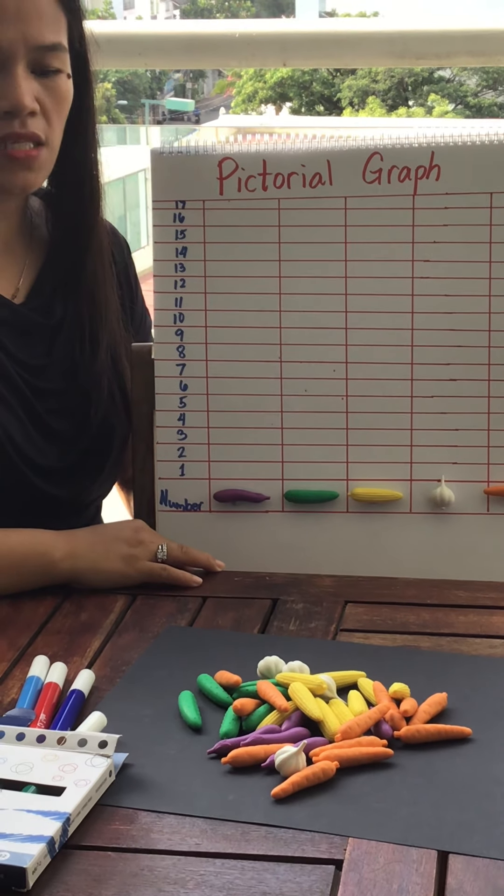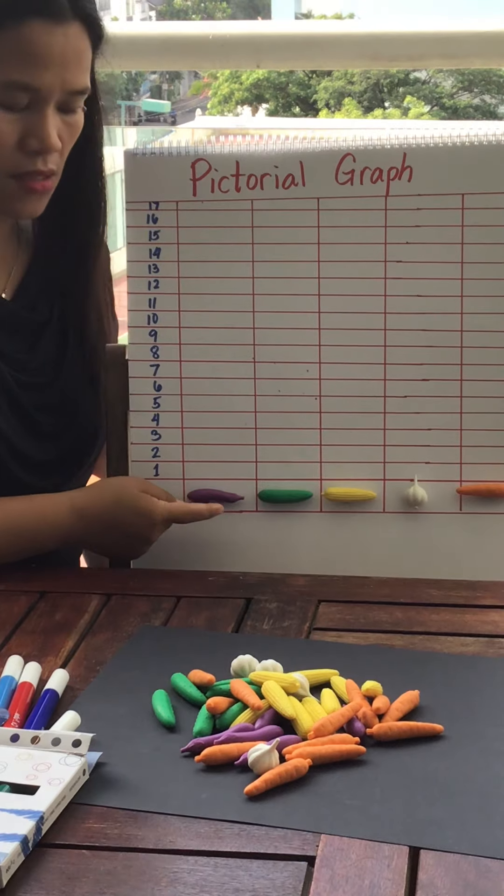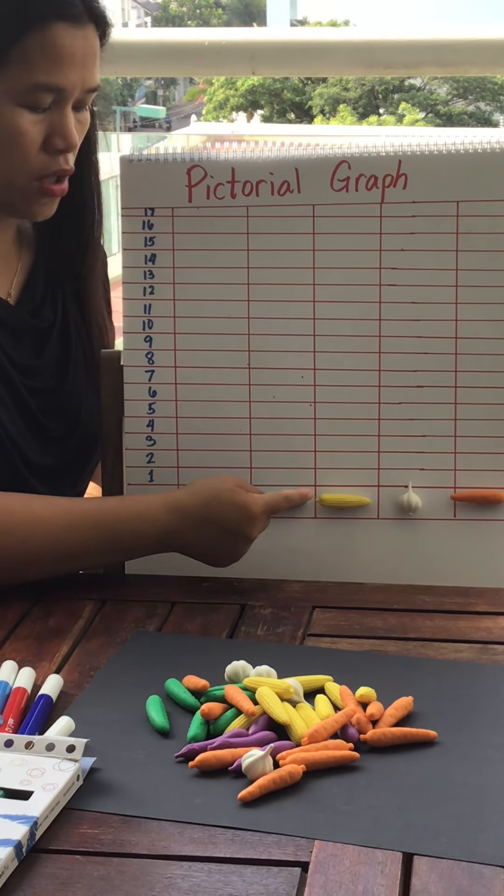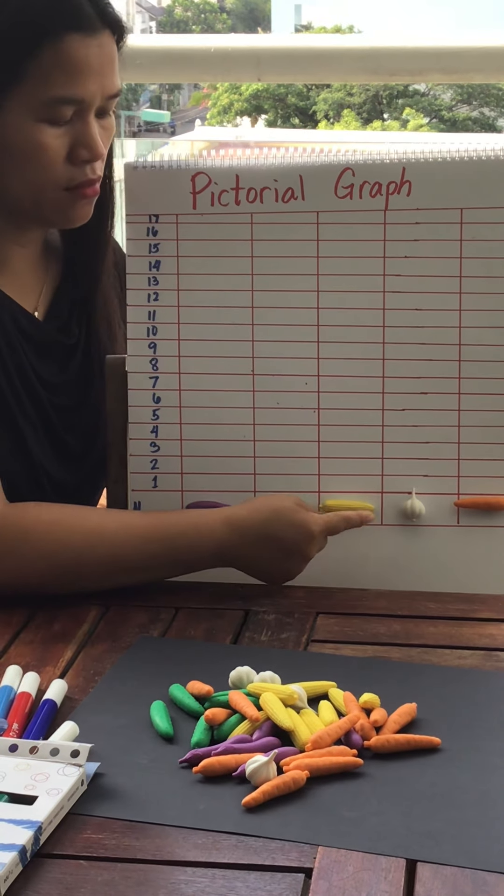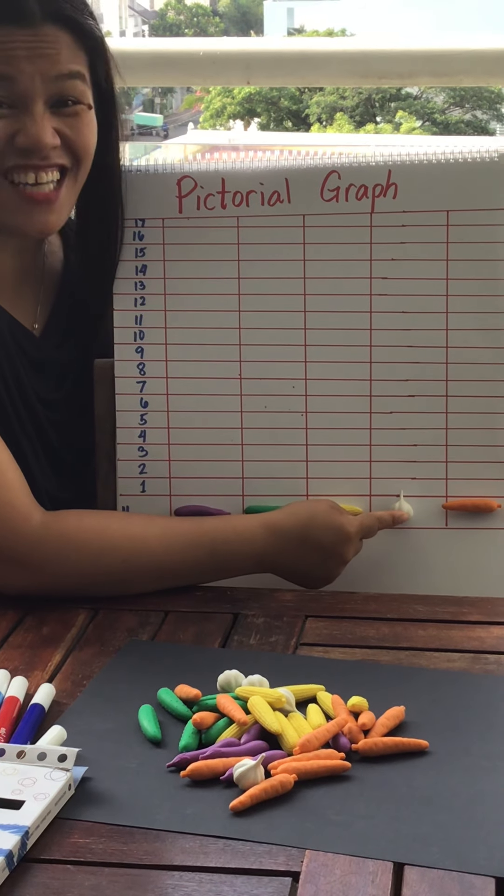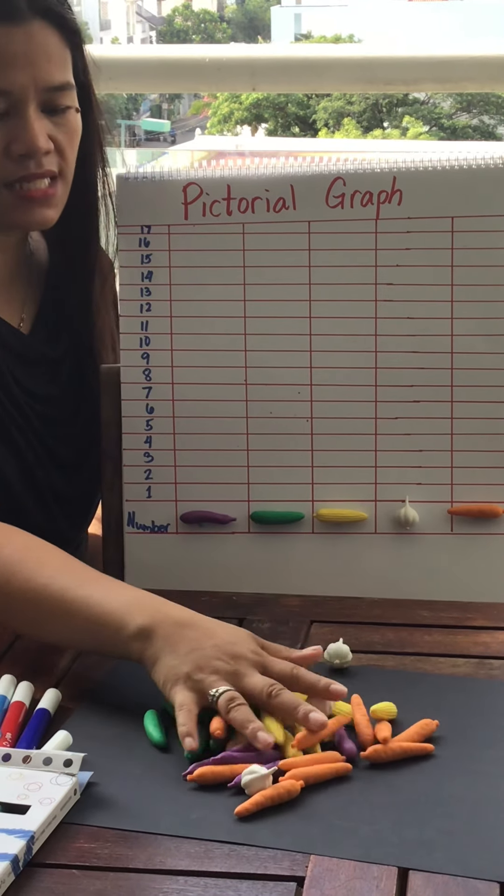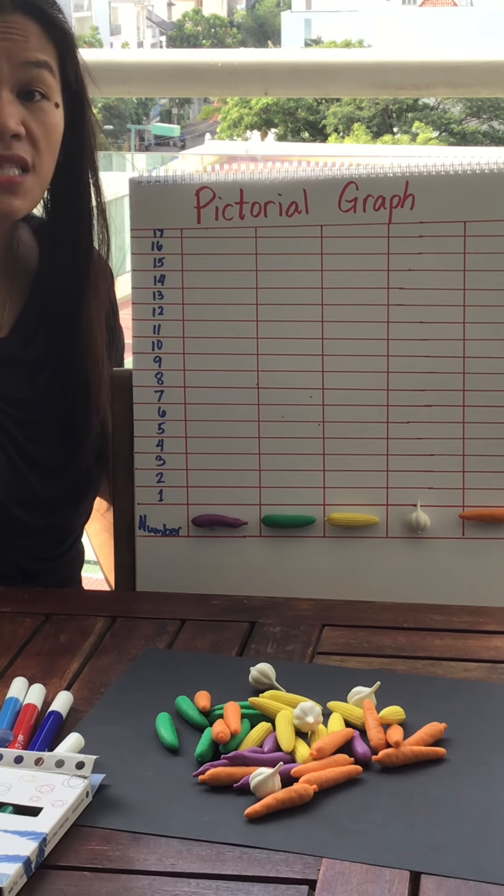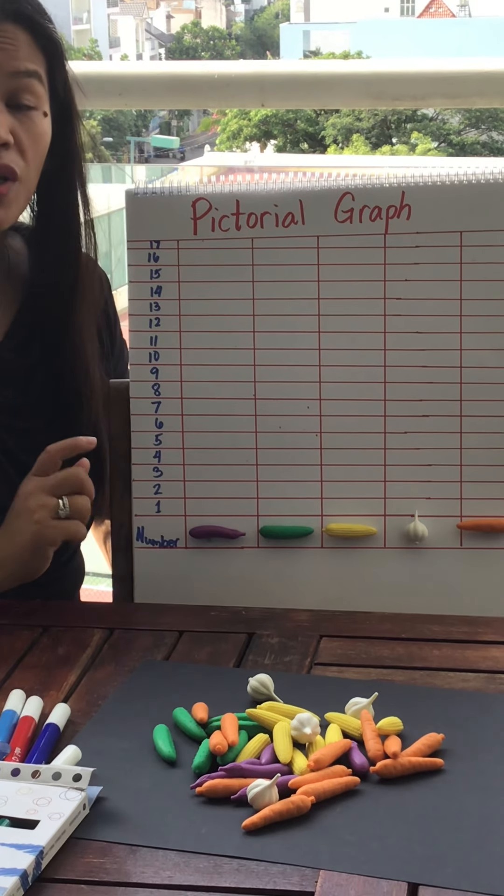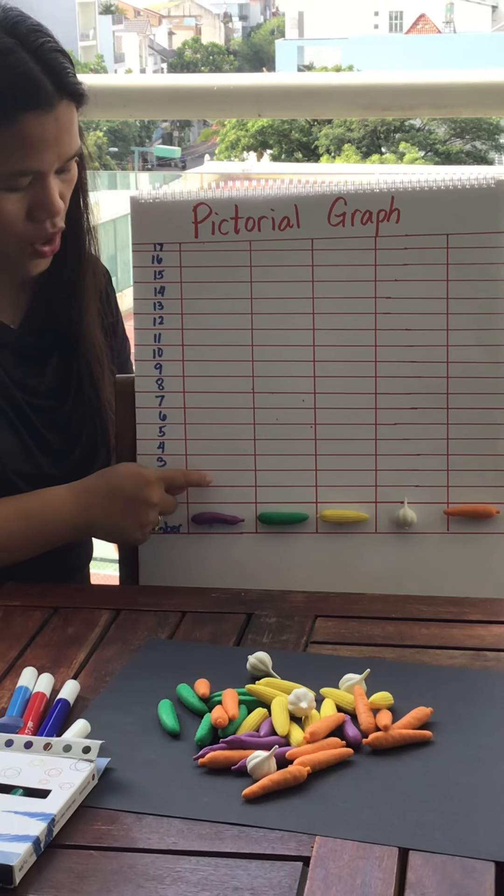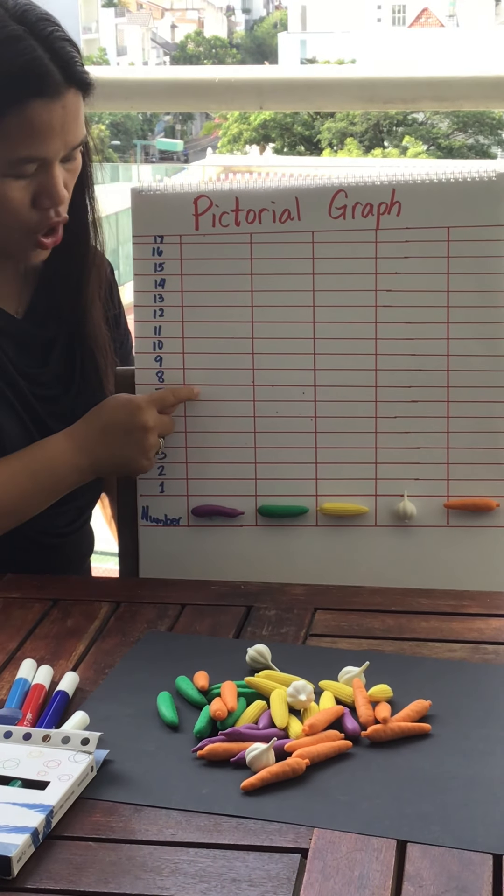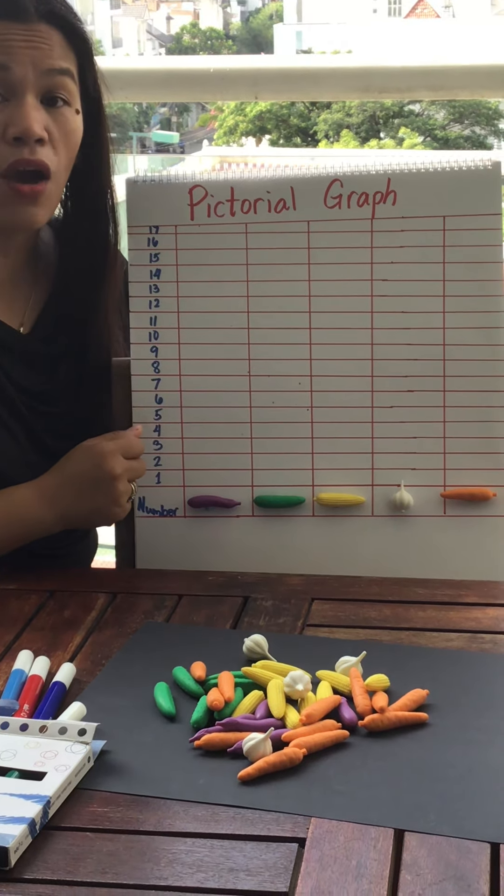I need to have an eggplant, a cucumber, corn, garlic, and carrots. Now look at these things over here, it's all mixed up. So we are going to count them and we are going to show it here on our graph how many.